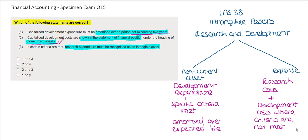And then the final statement says that if certain criteria are met, research expenditure must be recognised as an intangible asset. Again, based on the requirements of IAS 38 we know that research costs should always be expensed and therefore our answer must be the second option, statement number 2 only.